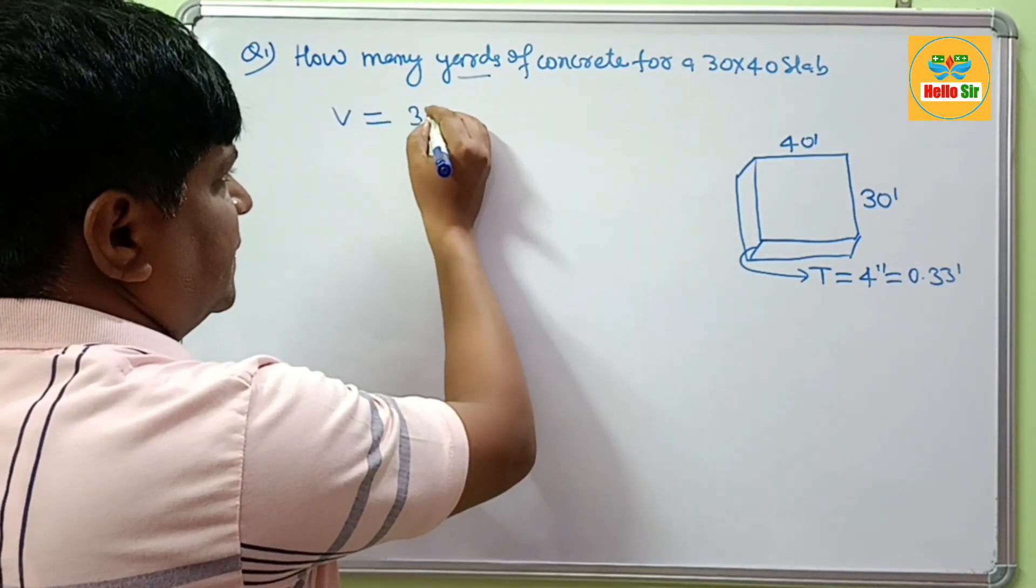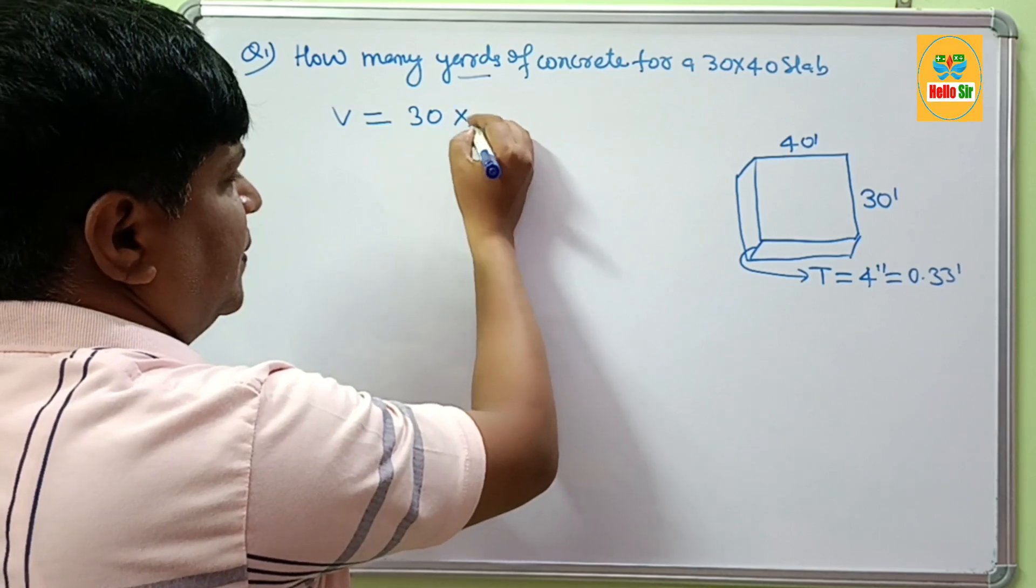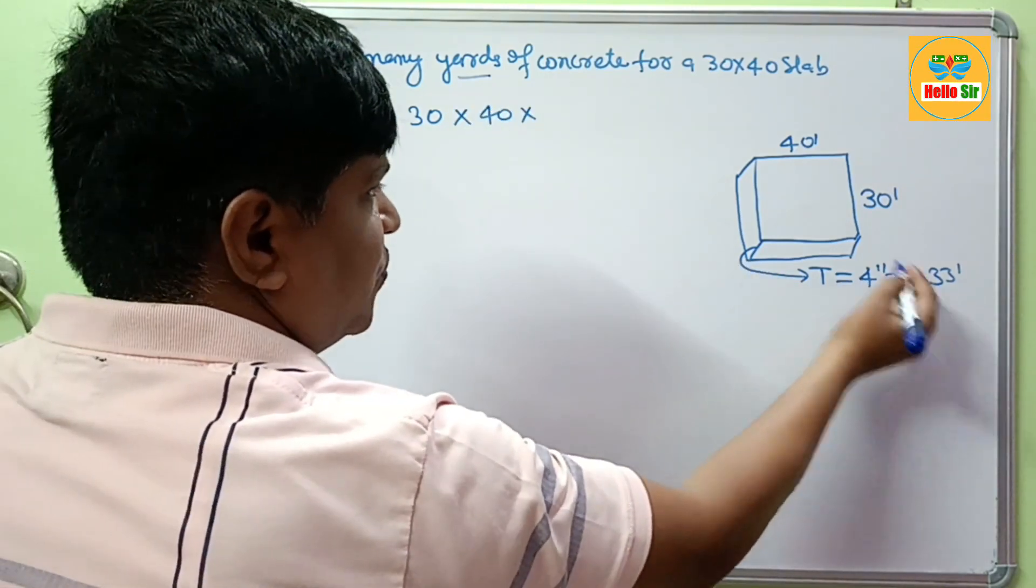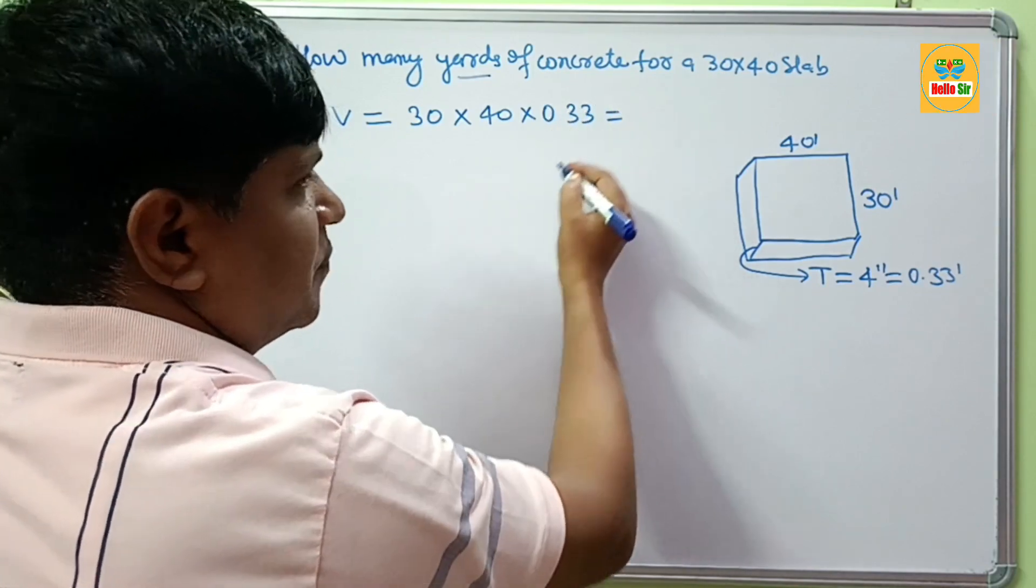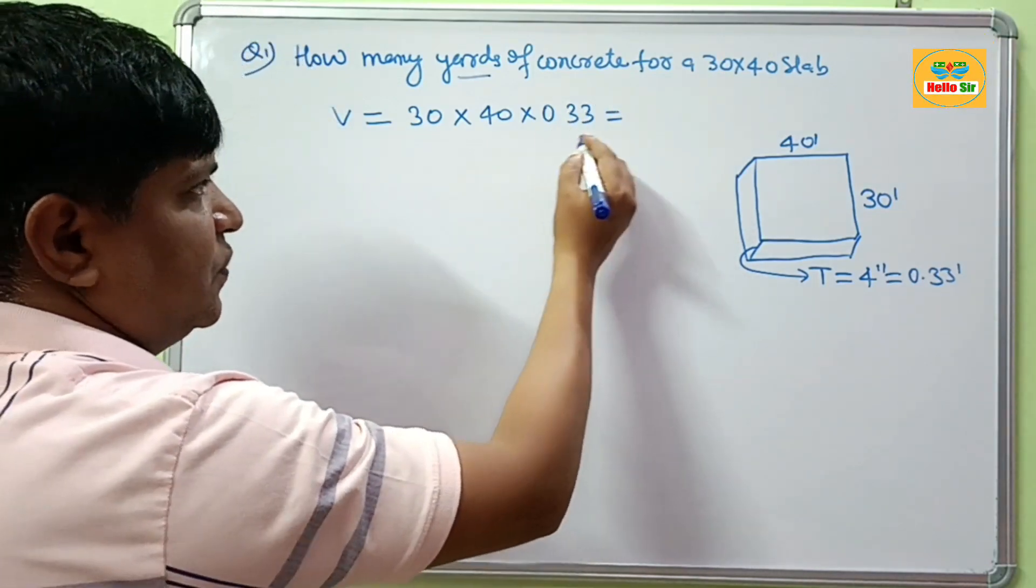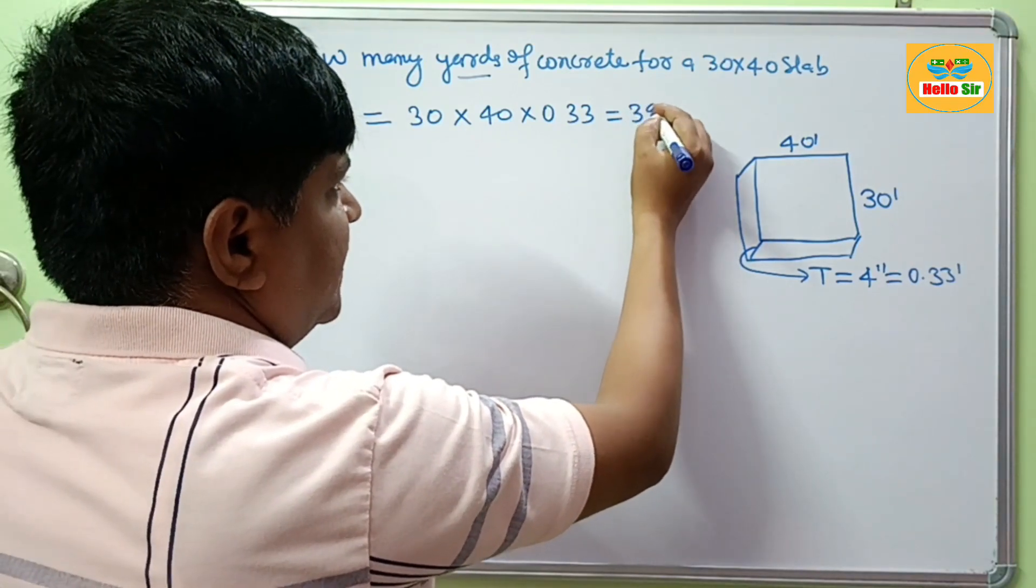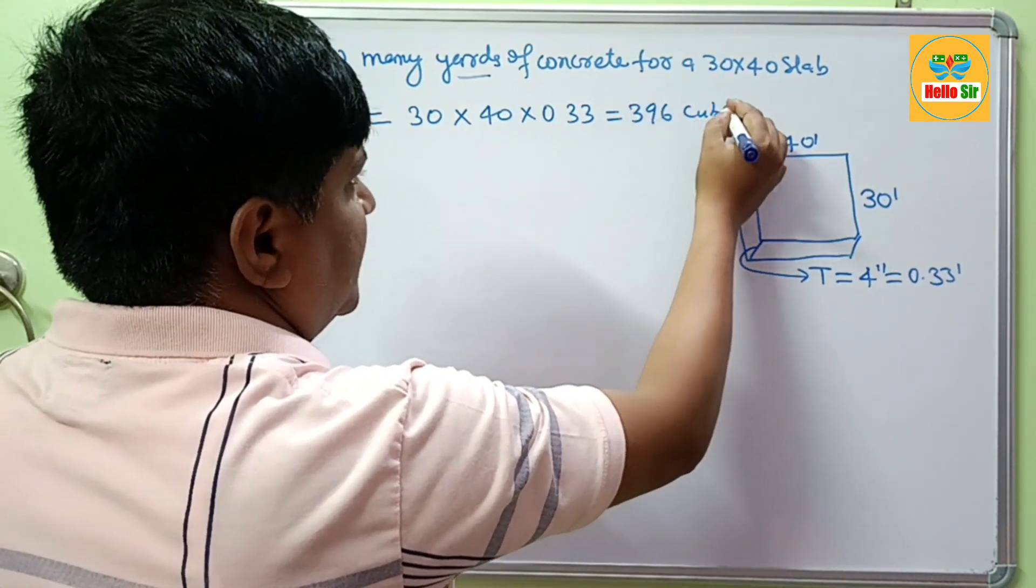It is 30 feet times 40 feet times 0.33 feet thickness. Multiply all these figures and you get 396 cubic feet.